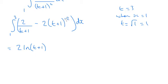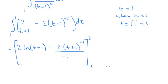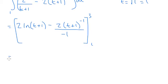For the second term, I add 1 to the power and divide by the new power. That's minus 1 over minus 1. I also need to multiply by the differential of the bracket, but that's just 1. So with boundaries 3 and 1, that becomes 2 ln(t plus 1) plus 2 over (t plus 1).